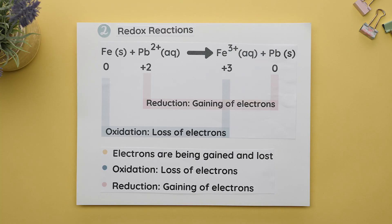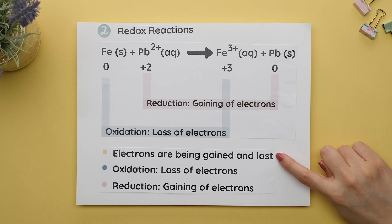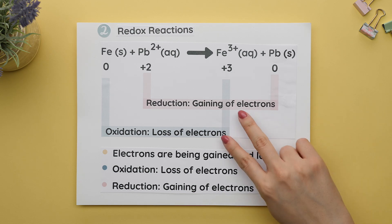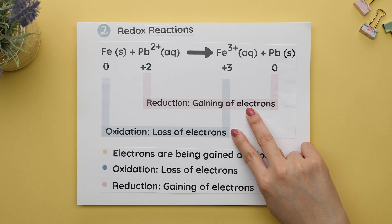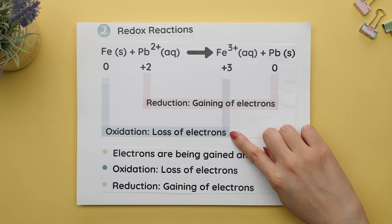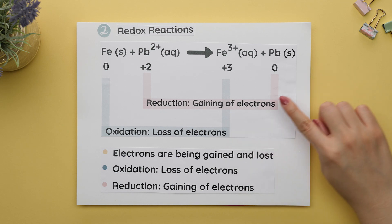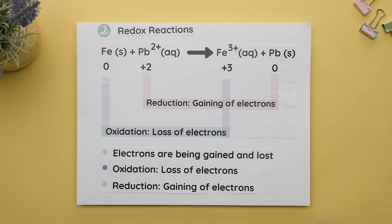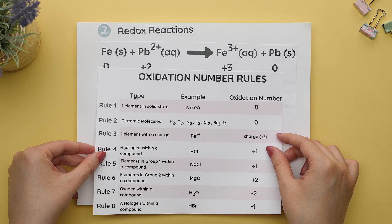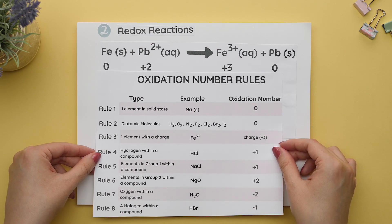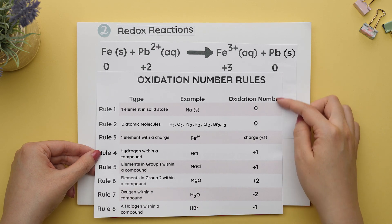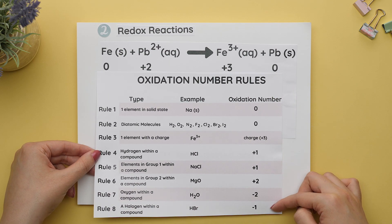The second chemistry topic that uses the least common multiple is redox reactions. Redox reactions are a type of reaction where electrons are being gained and lost between two reactants. A redox reaction undergoes two processes at the same time. The first process is oxidation, which is the loss of electrons. The second process is reduction, which is the gaining of electrons. We use oxidation numbers or oxidation states to help us determine which reactant undergoes oxidation or reduction.